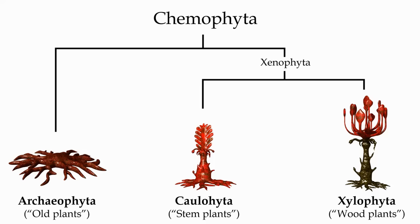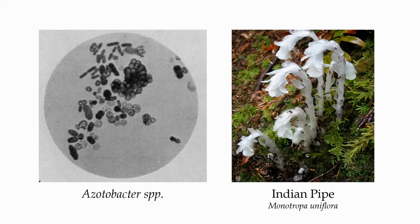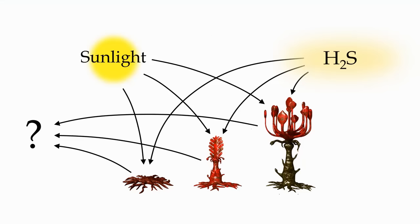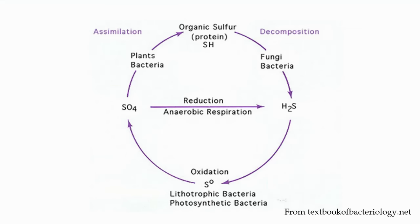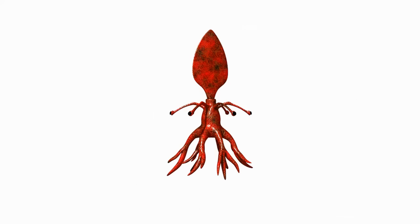Before the animals come ashore, there'll be nothing around to eat these plants, with one notable exception. Saprotrophs are organisms that absorb nutrients from dead or decaying organic matter. The most recognizable saprotrophs on Earth are fungi, but saprotrophy also exists among bacteria and even some plant species. In these ancient forests, dead plant matter represents an as-yet unexploited source of nutrients, so it's very likely that a clade of chemophyte will evolve a saprotrophic lifestyle. The chemophytes may be especially suited for saprotrophy because organic decomposition gives off hydrogen sulfide, from which chemophytes derive a portion of their energy. One clade of chemophyte may adapt their roots to absorb more hydrogen sulfide and other nutrients from the bountiful leaf litter that covers the forest floor.